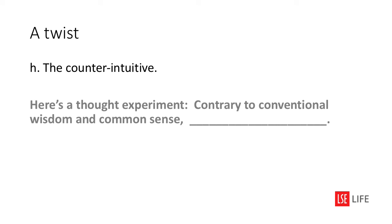Here's a thought experiment: 'Contrary to conventional wisdom and common sense, ___.' What can you discover in the counterintuitive? Consider these statements: some schools prevent people from learning; health systems can make people unhealthy; having a lot of choices can result in people simply not choosing. Can you make a case for a counterintuitive proposition? How does the counterintuitive offer an insight into what's actually going on?